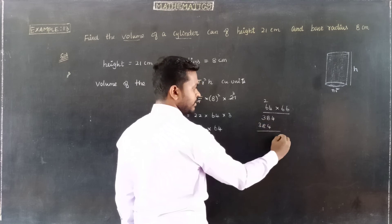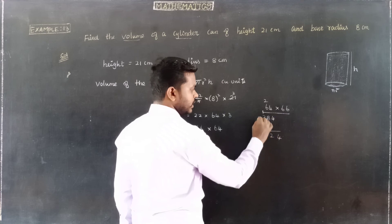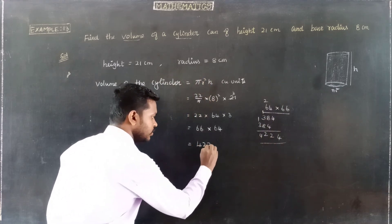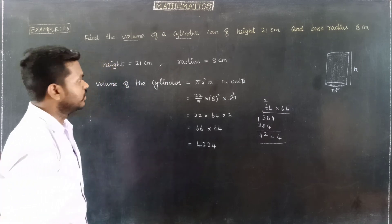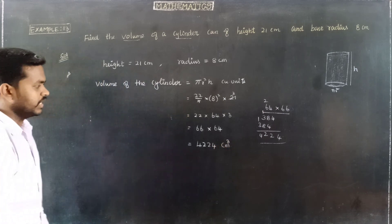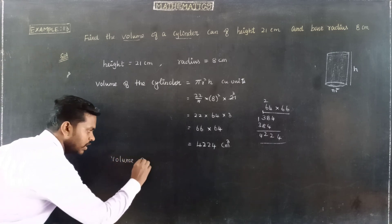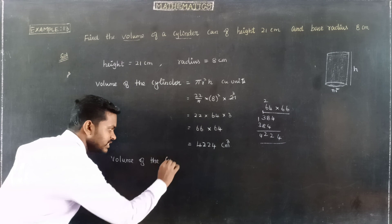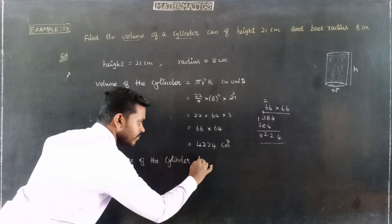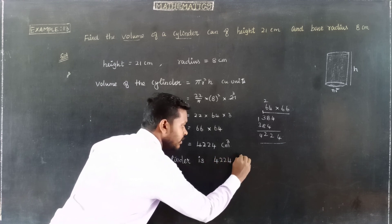Continuing the calculation: four thousand two hundred and twenty-four centimeters. So the volume of the cylinder is 4224 centimeters cubed.